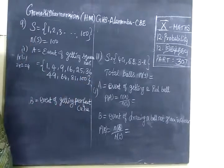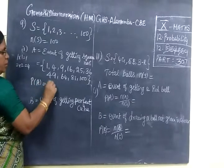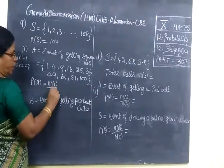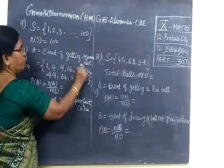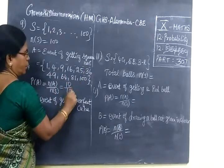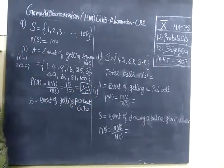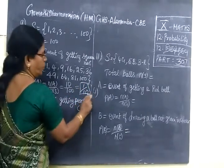So these are all square numbers. Therefore, P(A) equals n(A) by n(S). So totally we have 10 numbers. Isn't it? So 10 by 100. If you cancel, you get the answer as 1 by 10.